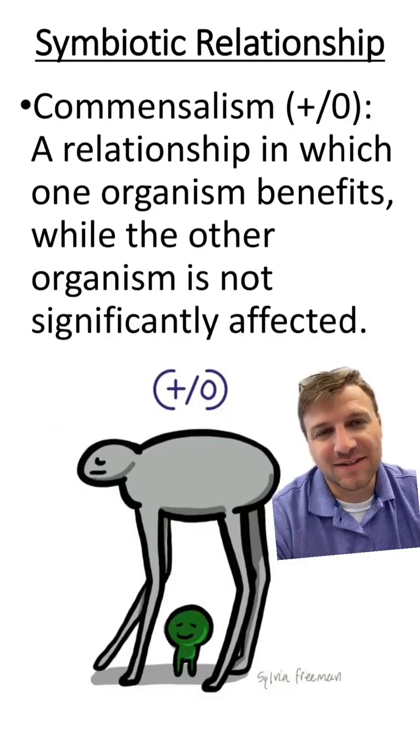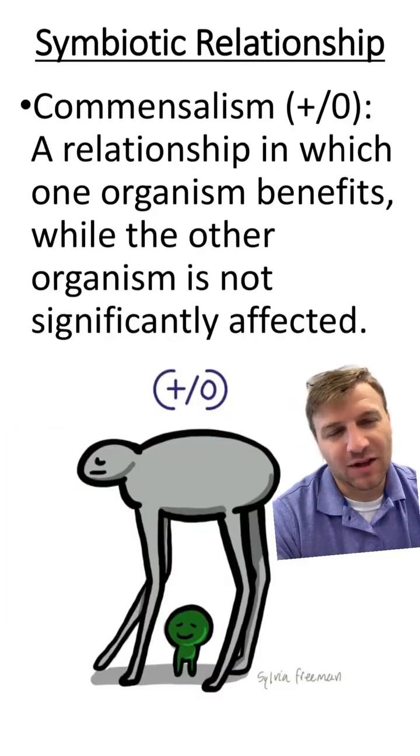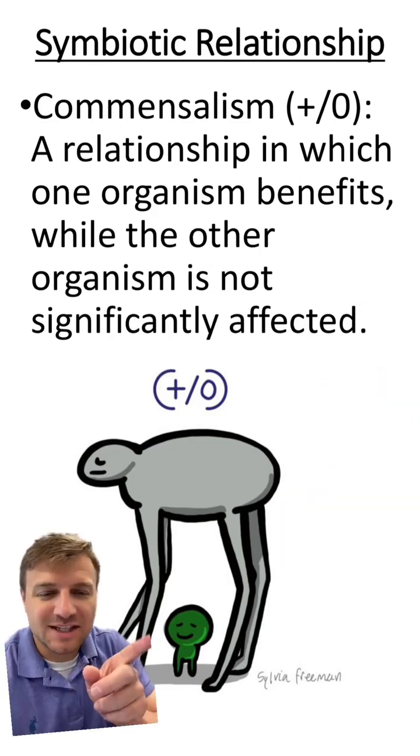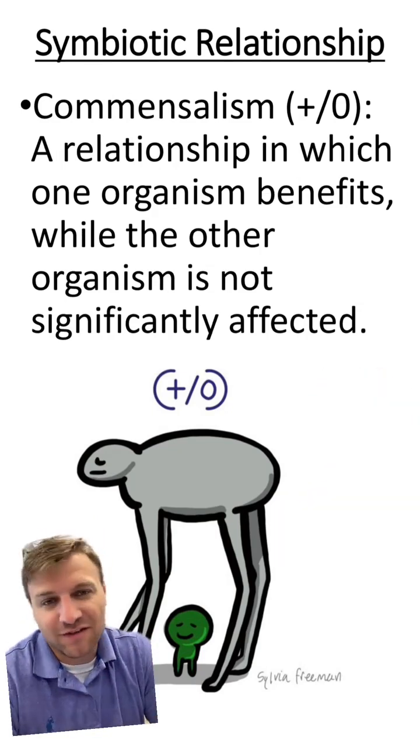Lastly is commensalism. This is a plus-zero relationship. In this relationship, one organism benefits while the other isn't affected. You can see this organism is benefiting, but the other really isn't being affected.